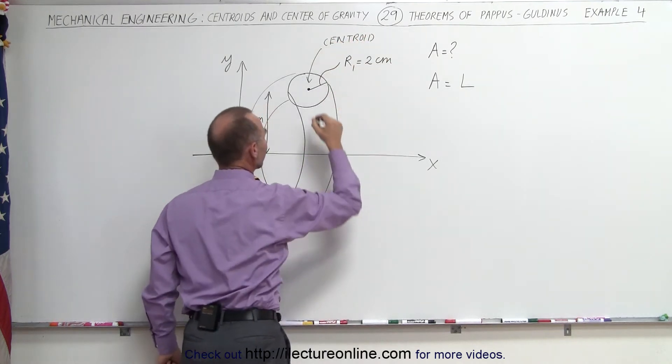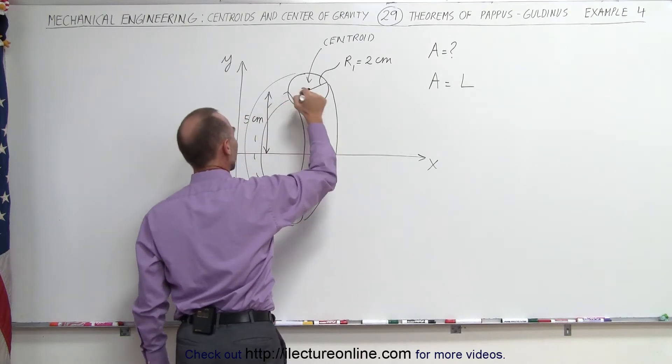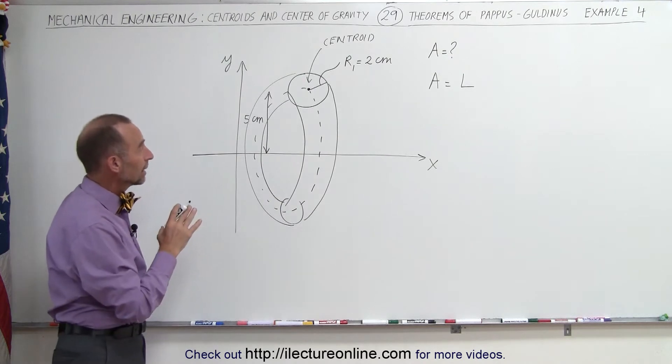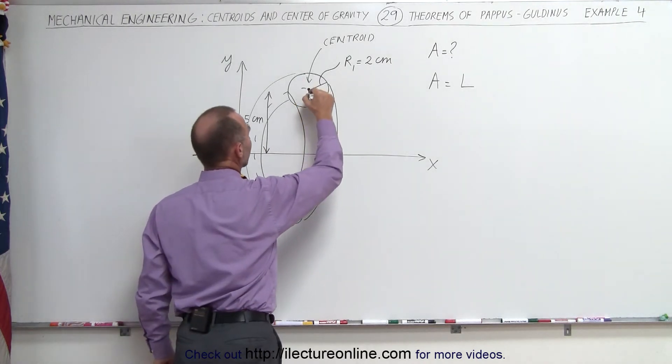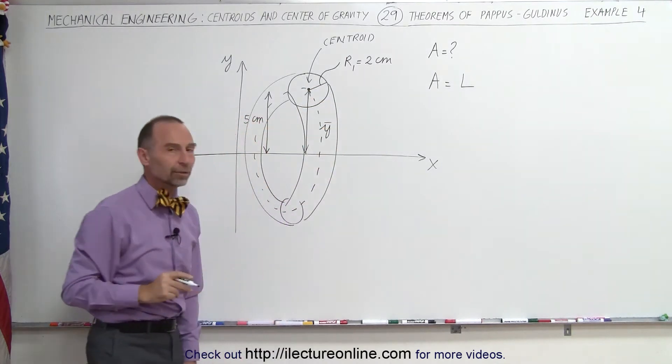And we're rotating it about the x-axis, so the path will look like this. Looks like a circular path. So therefore, the length of the path would be 2π times the radius. The radius will be the y-coordinate of the centroid.